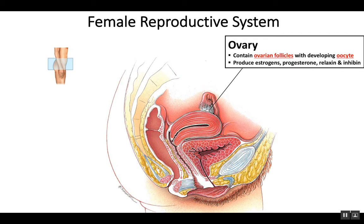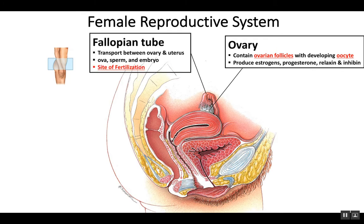The female reproductive organs also include the fallopian tubes, also known as the uterine tubes. These form a passageway that transports the oocyte from the ovary towards the uterus. The egg, or oocyte, will be released during ovulation and collected into the fallopian tube. The fallopian tube has small finger-like processes which help to sweep the oocyte into the fallopian tube.